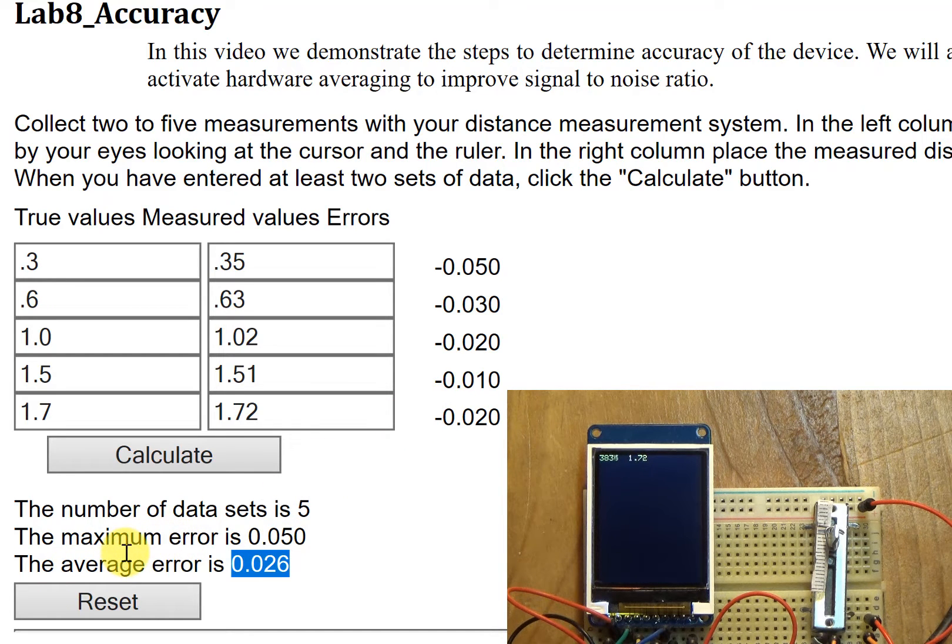Depending upon how well you calibrated and how well this thing moved around, you may get better or worse data than this. It's not about making it perfect, it's about understanding what accuracy means. Accuracy is the difference between the true value and the measured value. Have fun with this lab.